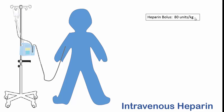Their blood will distribute the heparin throughout their body for a nearly immediate effect. We'll calculate the amount of heparin by multiplying 80 units times the patient's weight. We'll pull the heparin into a syringe and administer it through their IV tubing. The heparin will flow into the patient. Now we see that the heparin is distributed throughout the patient — we see the patient in red.